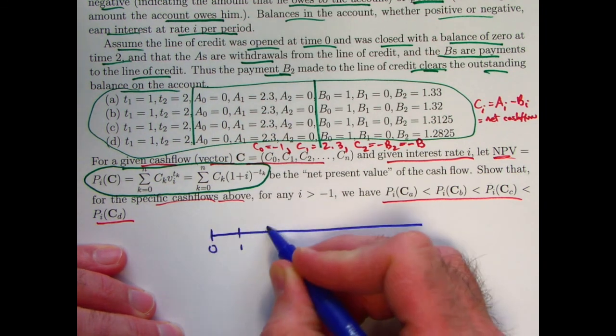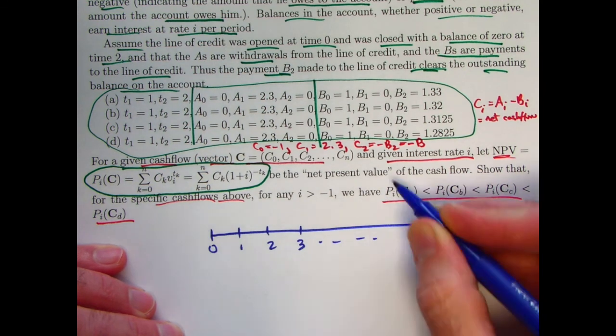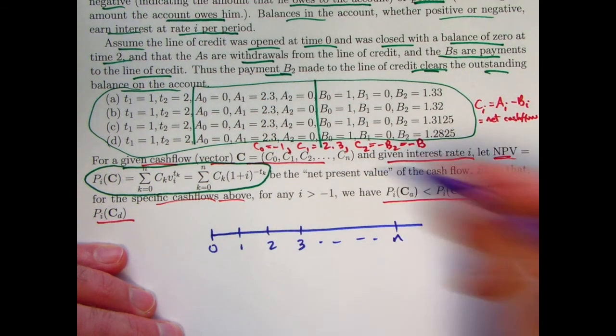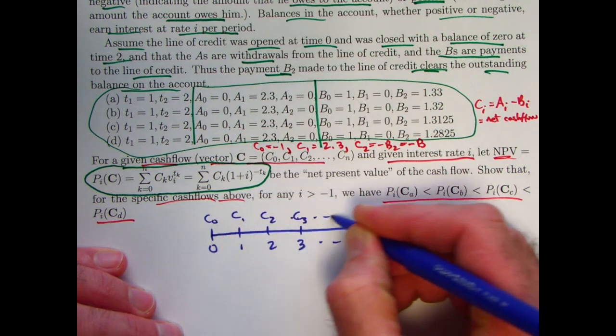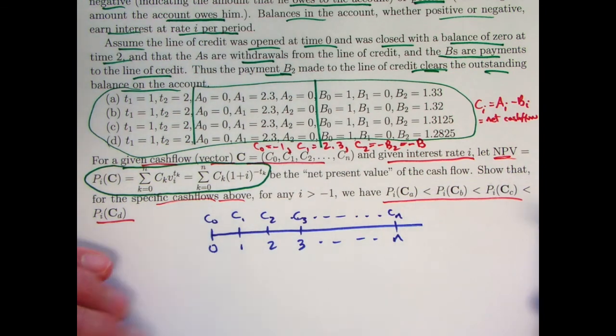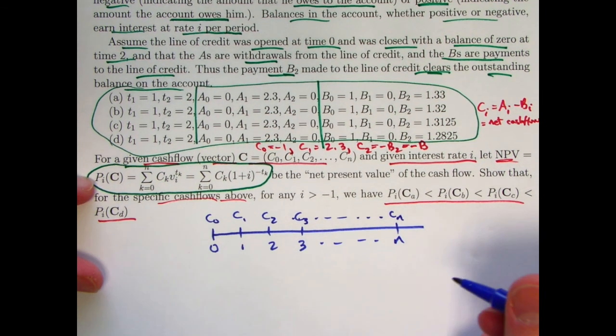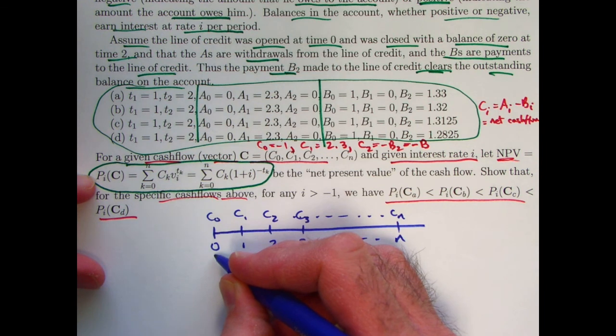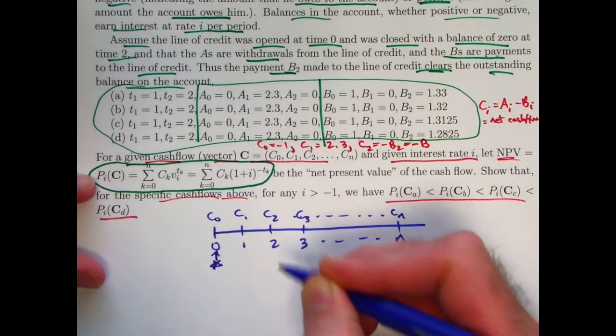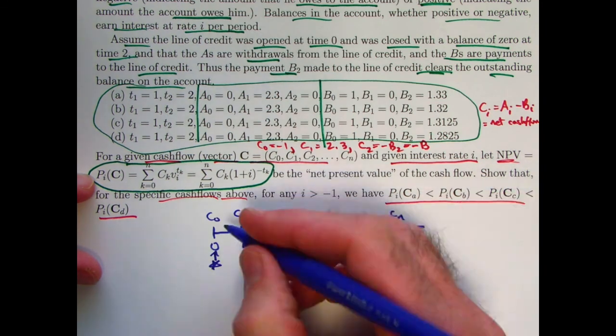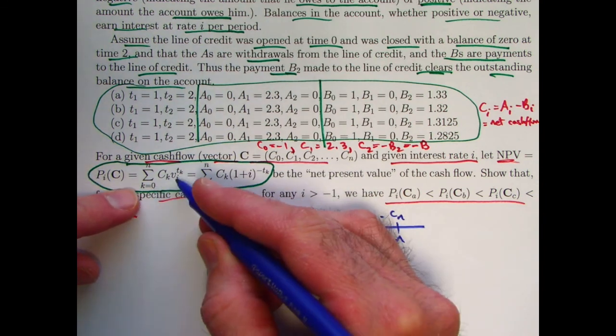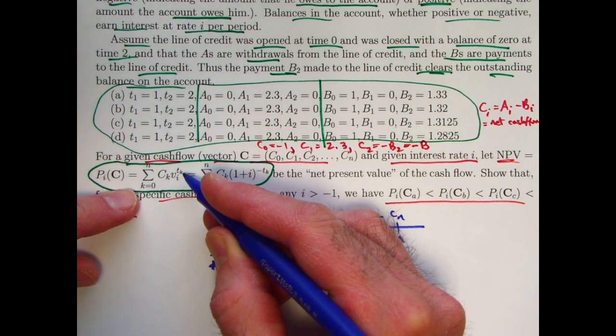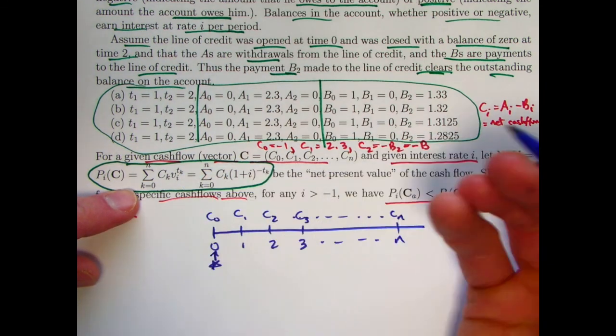We've got time zero, time one, time two, time three, et cetera, up through time N where you have these net cash flows, these C's going on. The present value or net present value at the given value of I is the present value at time zero of this cash flow for that given interest rate I. C zero is already at time zero, so it does not get discounted. Notice that when K is zero here, you're going to get V to the T zero, which is zero. V to the zero is one. So the first term is going to be just C zero.